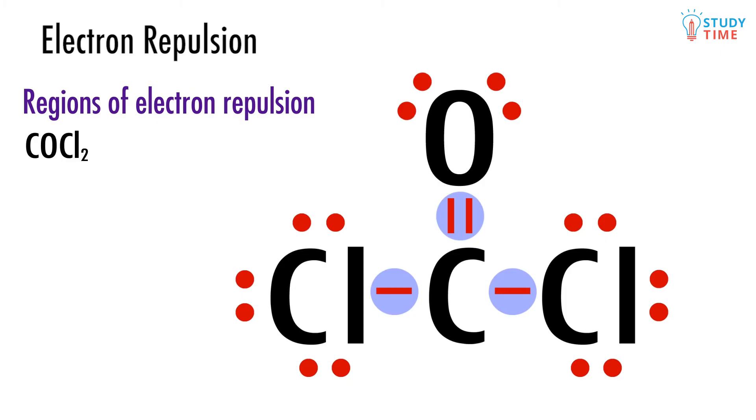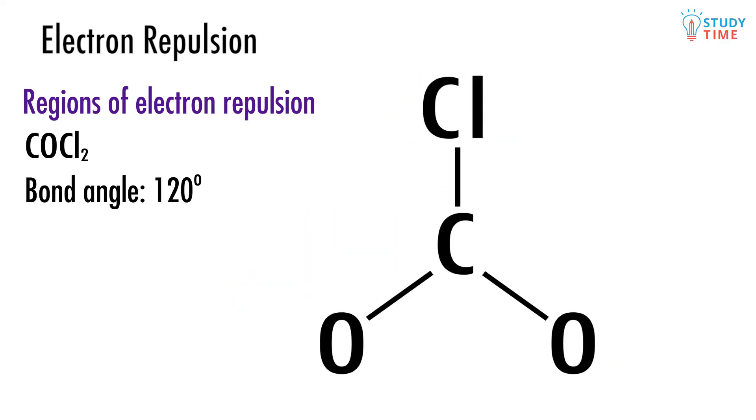Therefore, as you can see in the next diagram, in order for these areas of electron repulsion to be spread as far apart as possible, the angles between the bonds need to be exactly 120 degrees, like this.